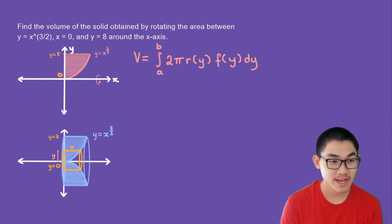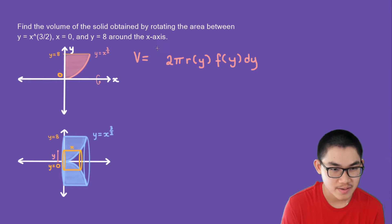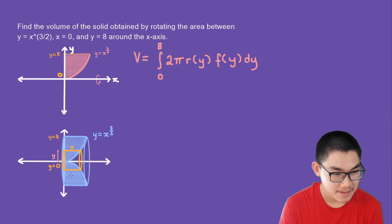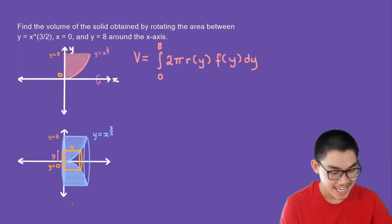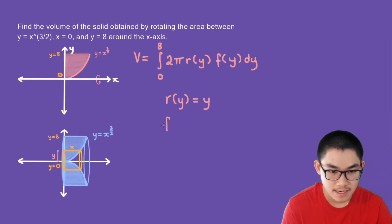The first step is to find a and b. If you look at our original function, the bottom is 0 and the top is 8, so a is 0 and b is 8. The second step is to find the radius and the height. The distance from the center until we reach the outer shell is the radius, and the radius is just equal to y, so r(y) = y.